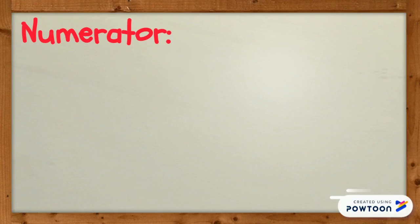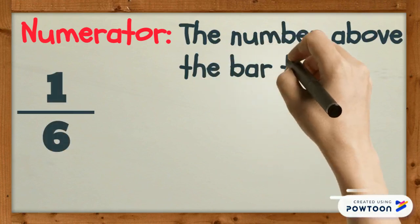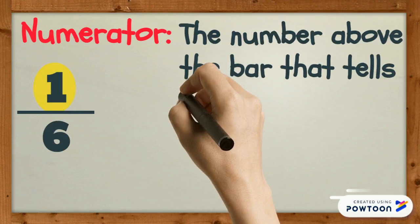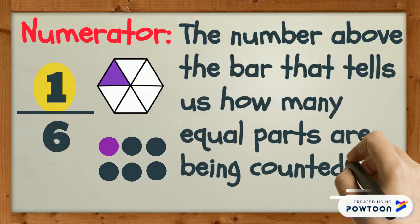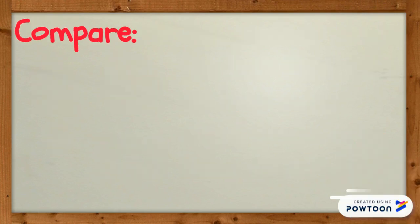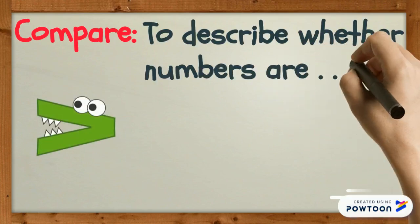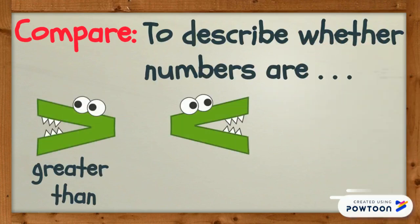Numerator is the number above the bar that tells us how many equal parts are being counted. Compare means to describe whether numbers are greater than, less than, or equal to one another.